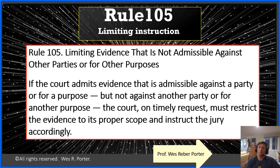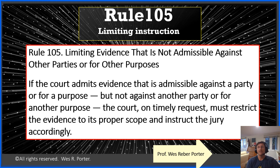'All right, Your Honor, if you're inclined to let this evidence in and believe the proponent's argument about the purpose they're offering it — this limited good purpose — can we stop right now in the middle and instruct the jury as to it?' And that's all Rule 105 says: if the court admits evidence that is admissible against a party or for a purpose but not for some other purpose, then on a timely request — right at sidebar when you think the ruling is coming down — the court must restrict the evidence to its proper scope and instruct the jury accordingly.